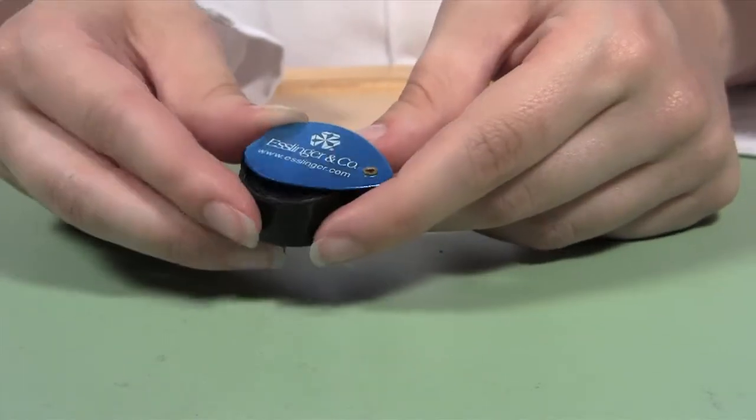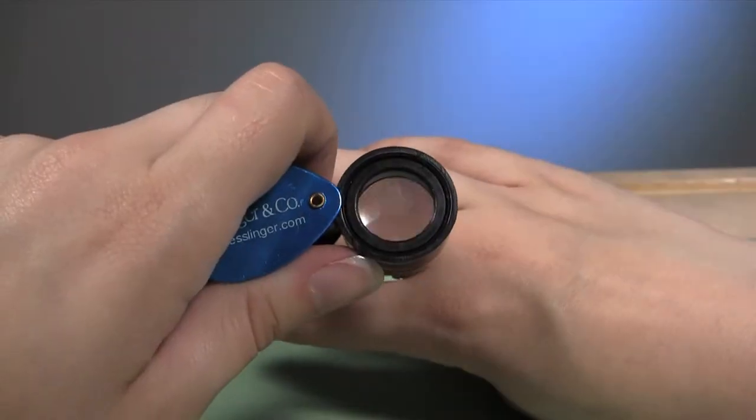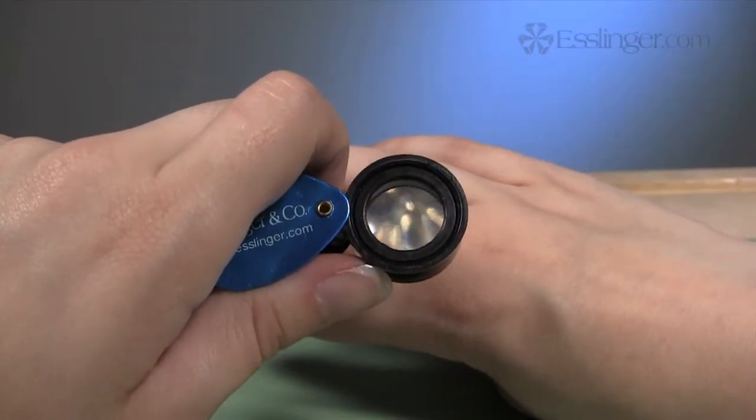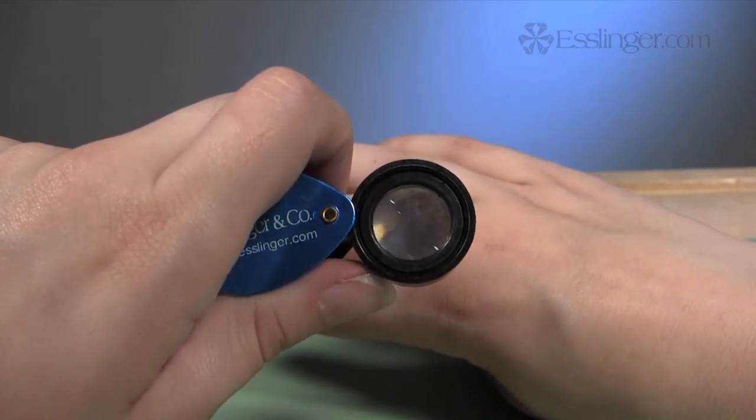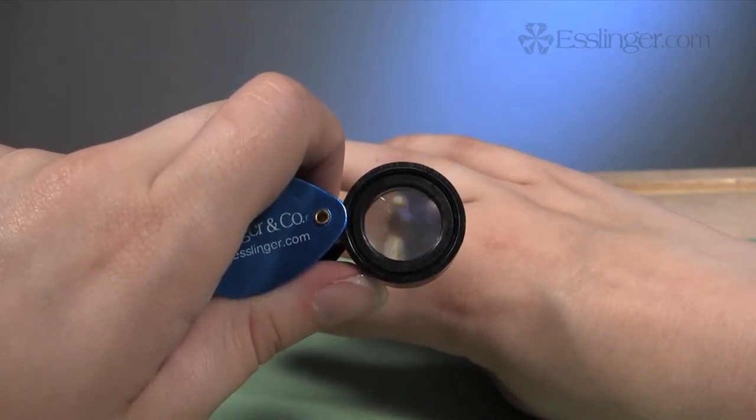To use, just flip the loop out of its cover. Providing 10 power magnification, you will easily be able to clearly read all of the small print, like small watch case numbers, jewelry stamps, and much more.